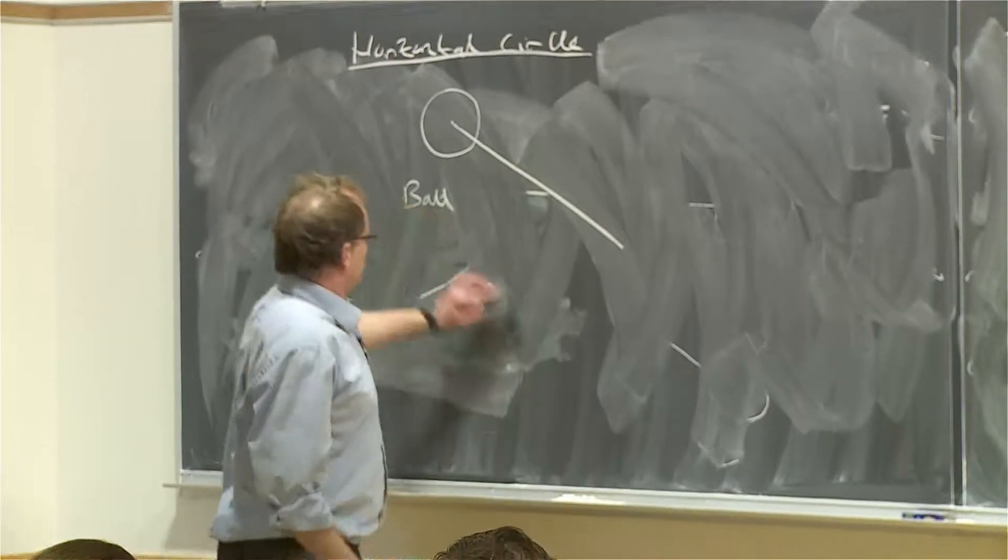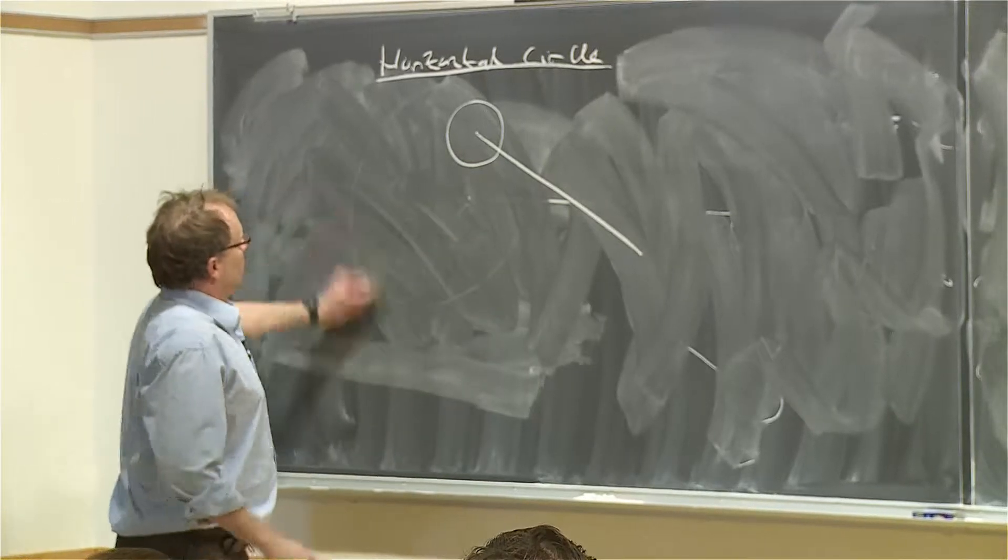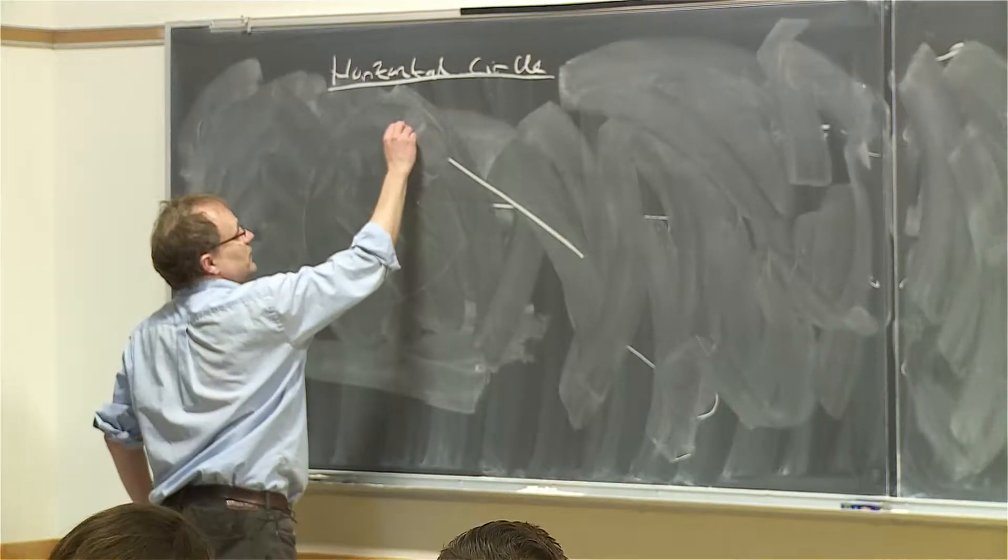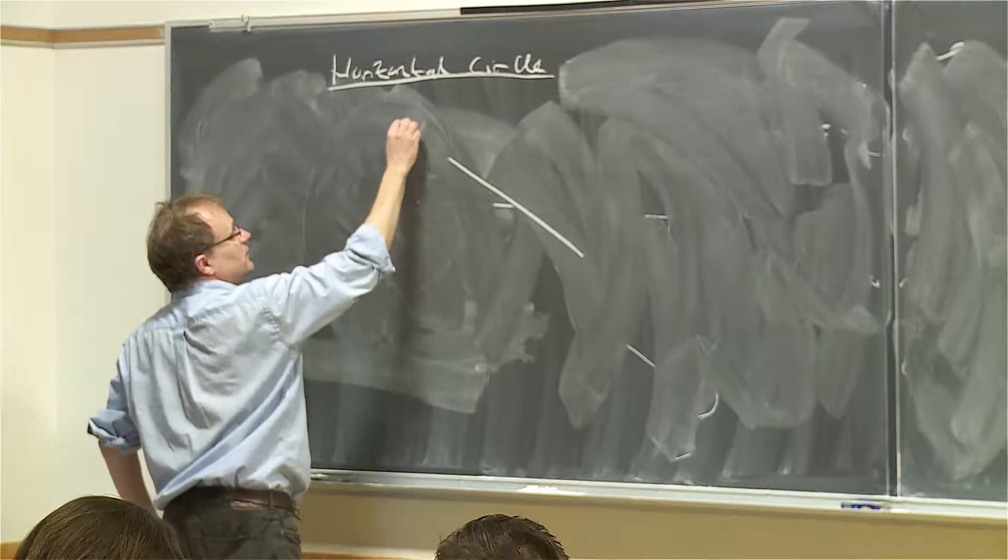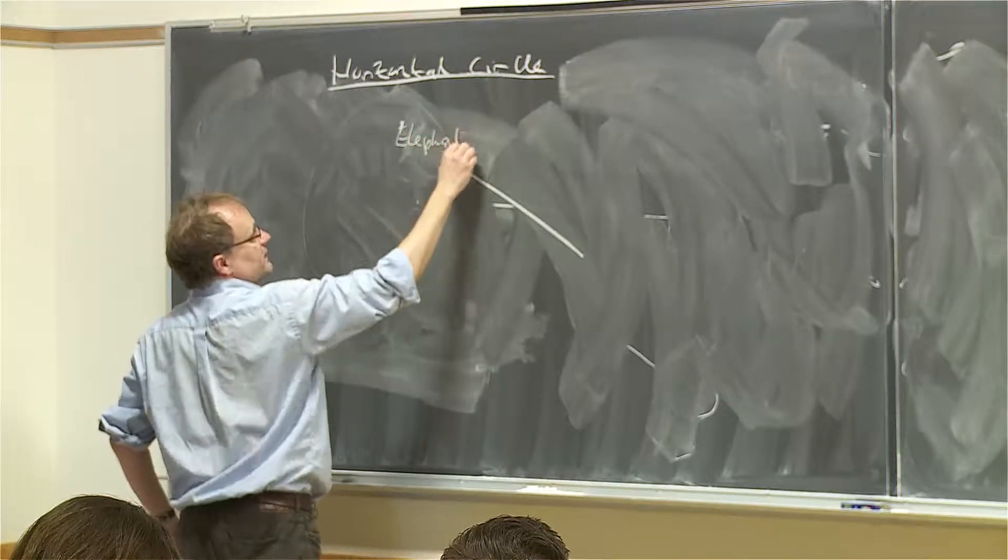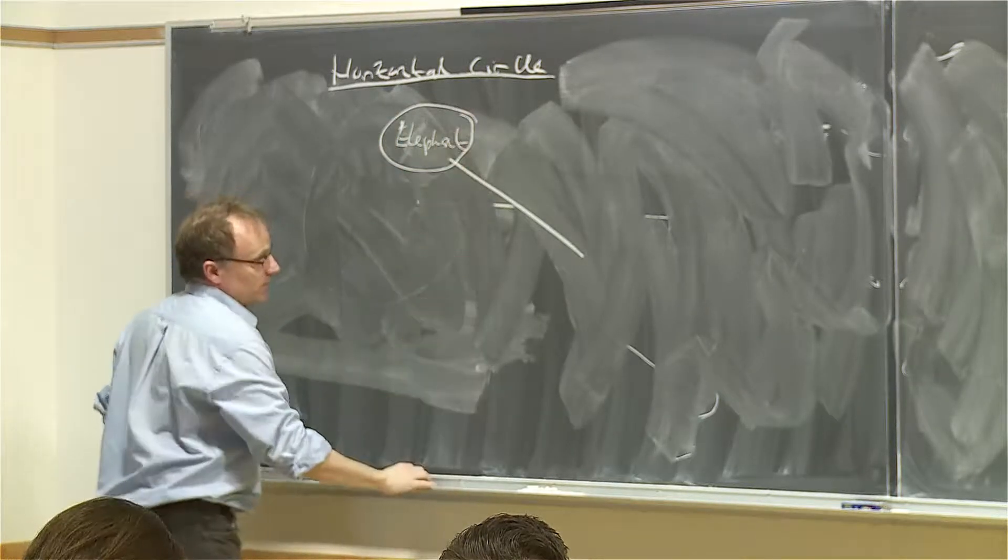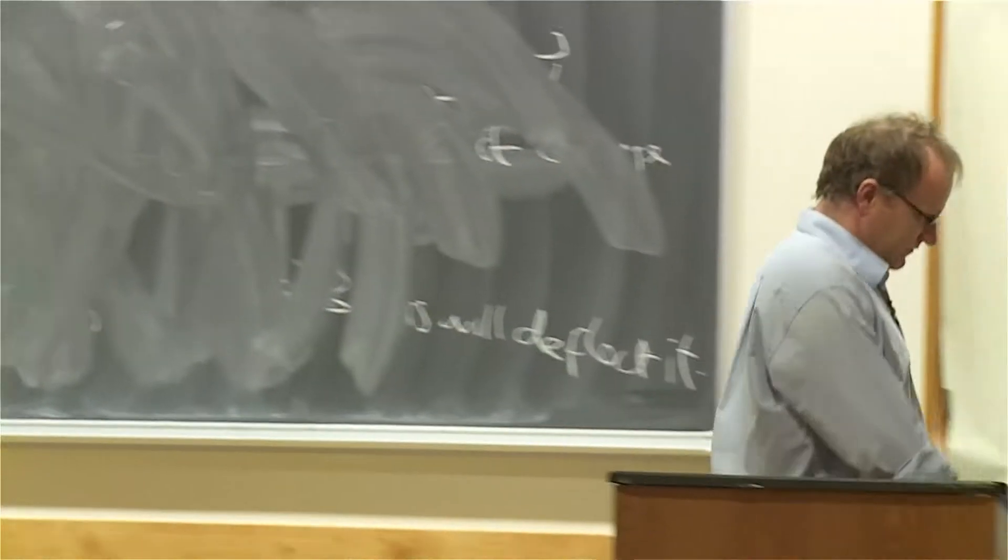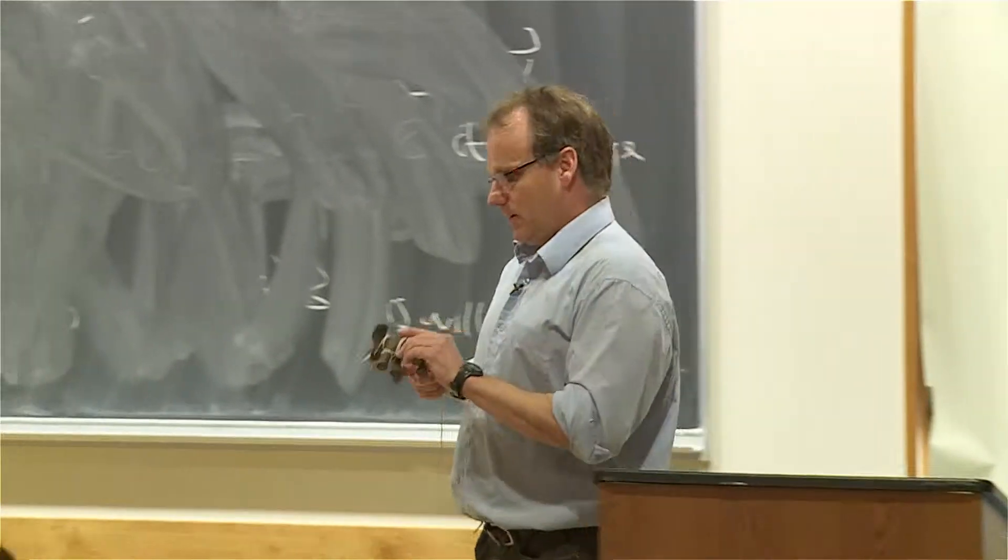So we're going to spin an object in a horizontal circle above your head. Now, I don't actually have a ball. I couldn't find a ball this morning. What I managed to find is an elephant. I can't really draw an elephant, but I can write elephant. Some object. So I bought one. Here's my elephant.